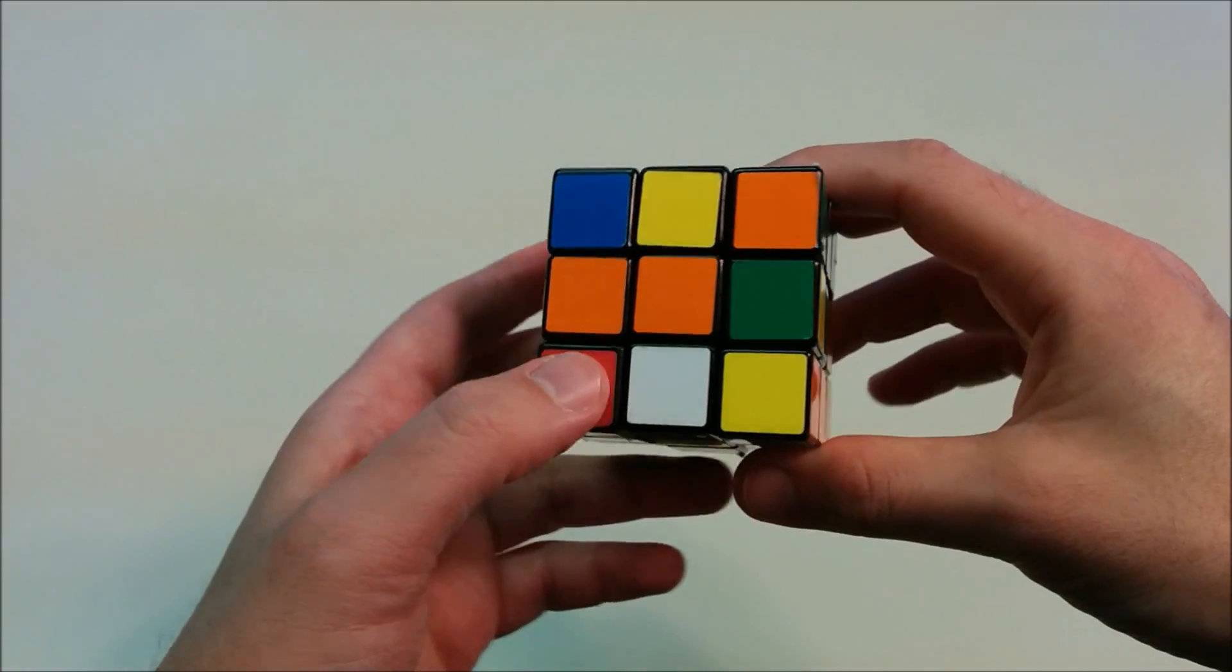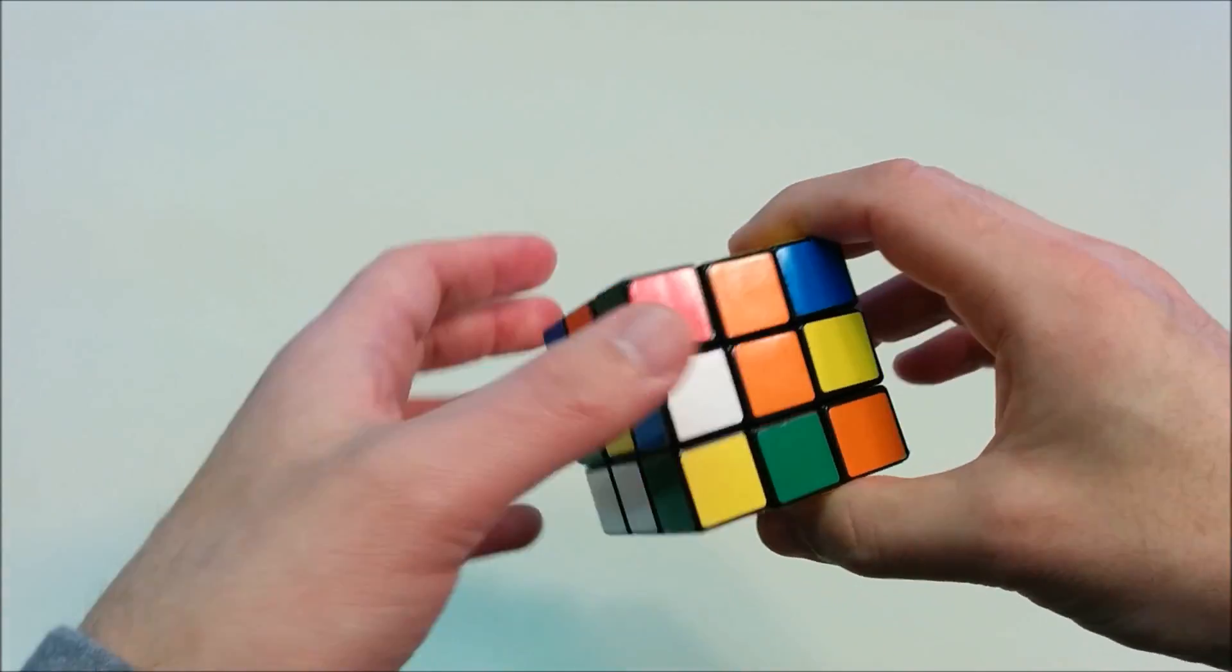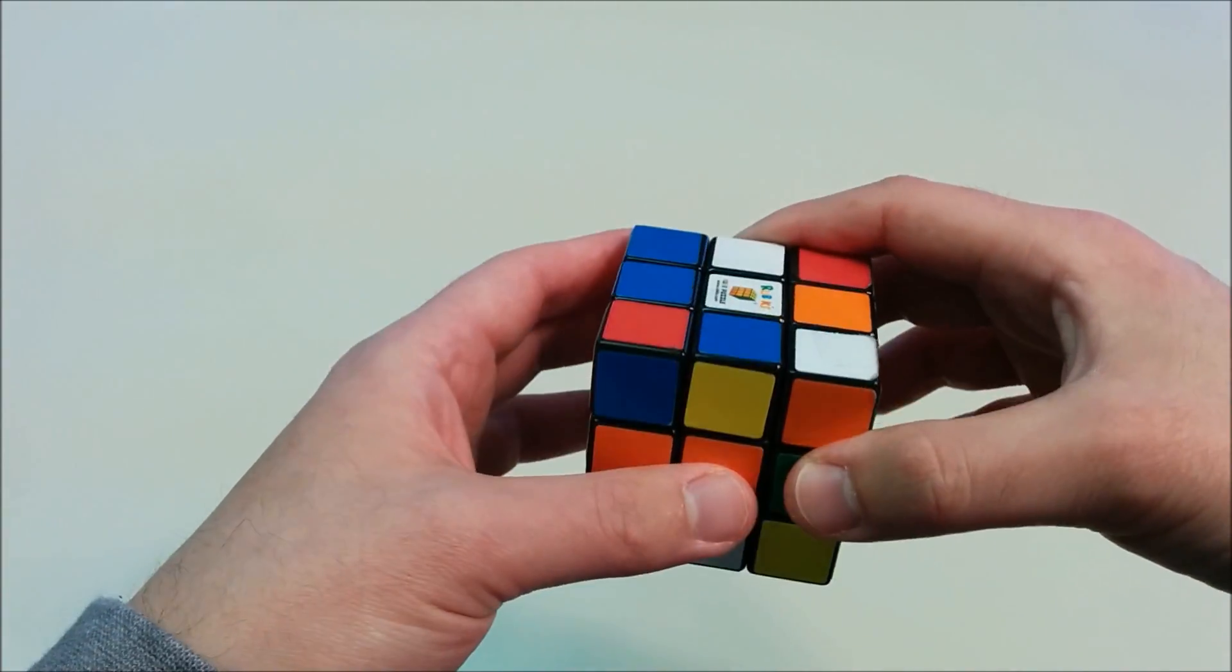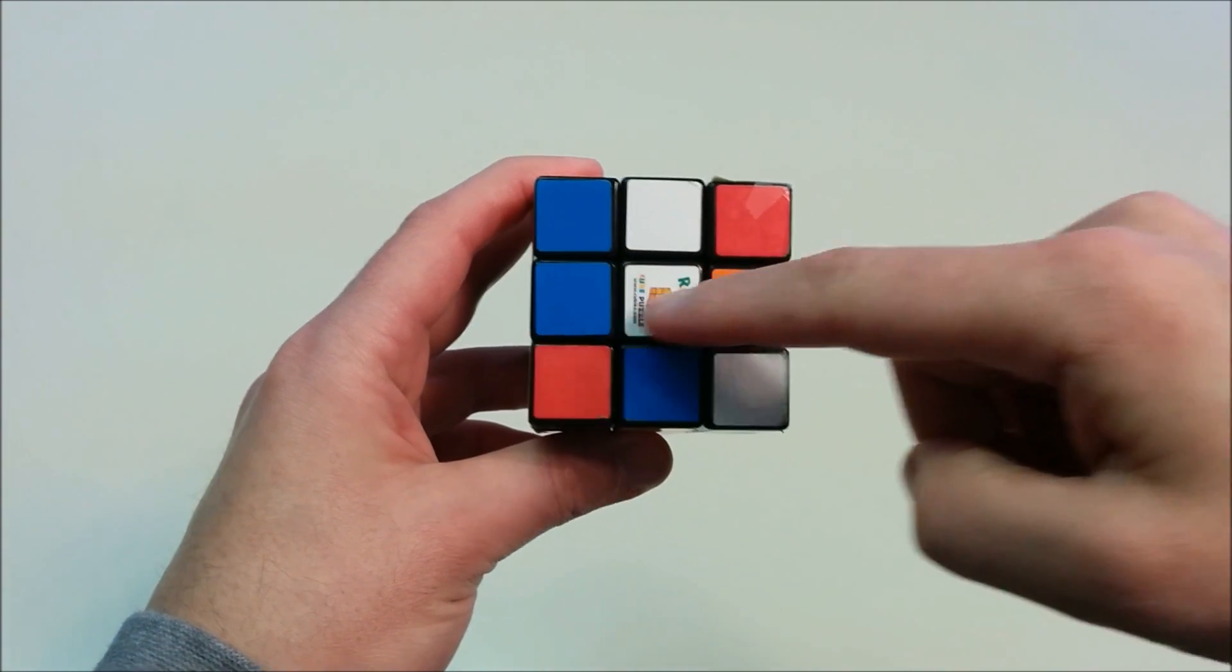Alright, let's get started solving the cube. The pieces are thoroughly mixed up, and now the first step in the layer method is to create the white cross.